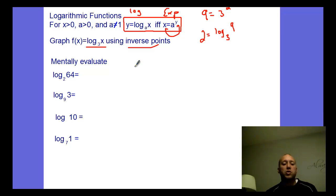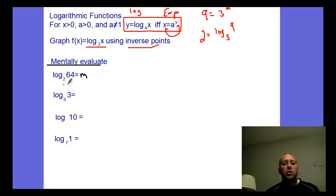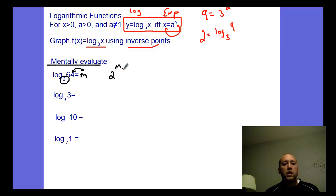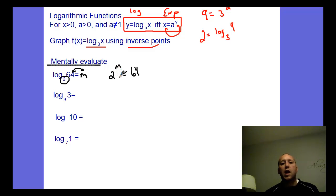The whole point of inverse functions is to undo what's happening. So log base two of 64 — what does this mean? We should be able to mentally evaluate these. Let it equal m. This is log form; let's write it in exponential form: two to the m equals 64. Thinking of it this way, two to what power is 64? Powers of two: 2, 4, 8, 16, 32, 64 — that's two to the seventh power. So m equals seven.